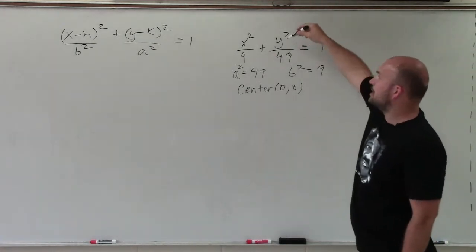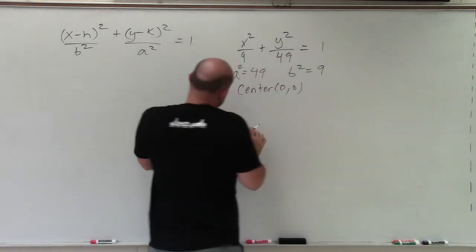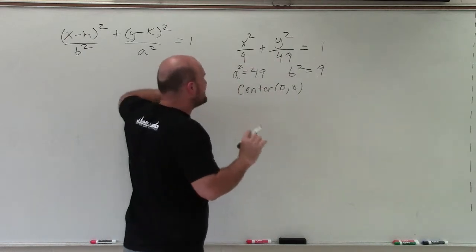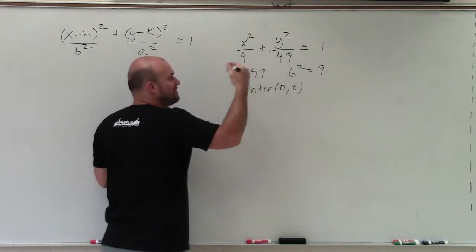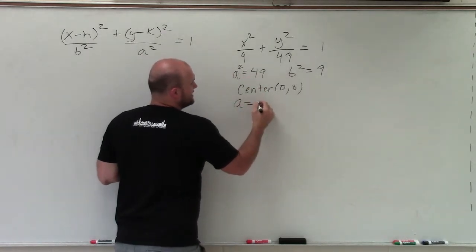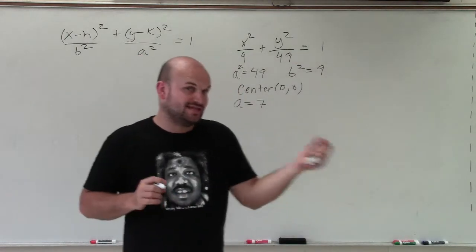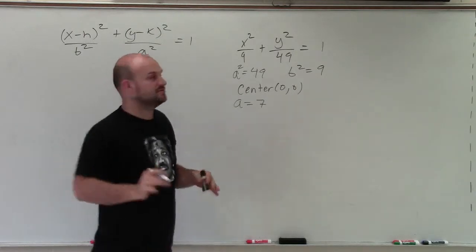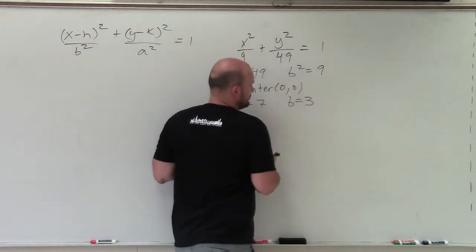So, since my a is under my y, I know I'm going to have a major axis that's vertical. Now, the distance from the center to my vertices is a. So if a squared equals 49, a equals 7. The distance from my center to my vertices, which is not on the major axis, but which is on the minor axis, which is perpendicular to the major axis, is b. So b squared is 9, that means b equals 3.